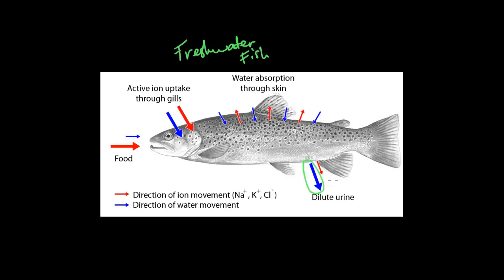As you can see, they have dilute urine. Blue is the direction of water movement, and red is the direction of ion movement, such as salts — Na (sodium), K (potassium), and Cl (chloride). Because water is absorbed through the skin via diffusion, dilute urine is produced, meaning there's a lot of water in the urine and it's not concentrated.